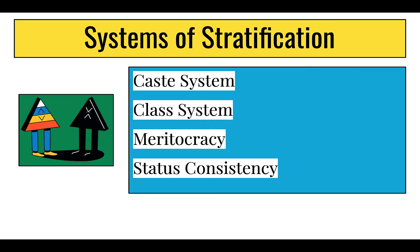Looking at some systems of stratification: first is slavery, the most extreme form of social stratification. It's based on the legal ownership of people — slaves are considered property of slave owners, not people. This is the most extreme form of stratification because enslaved individuals have no access to pursuing resources available in society and no opportunity for social mobility.